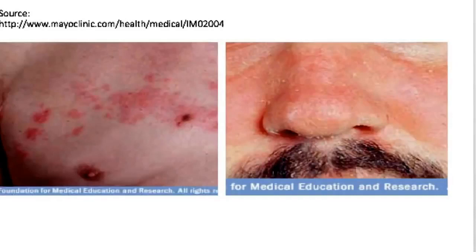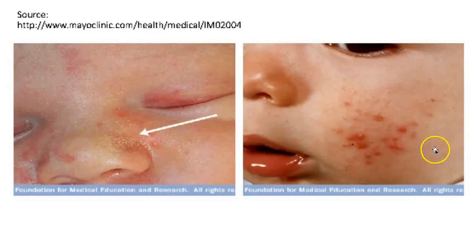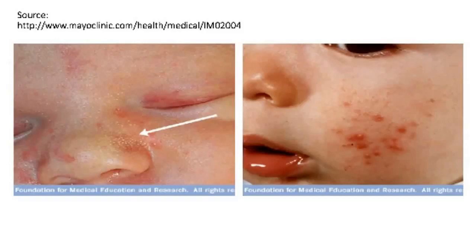For babies: milia are pinpoint, smooth, white raised areas with no inflammation or erythema. You see them on the chin and nose — leave them alone, tell parents to leave them alone. Here you can see baby acne — unfortunately it happens between the two-week and three-month mark, right when babies are getting really cute and you want to take pictures. These are small red bumps on the baby's cheek. Tell the parents to leave them alone, don't treat them, don't pick at them.